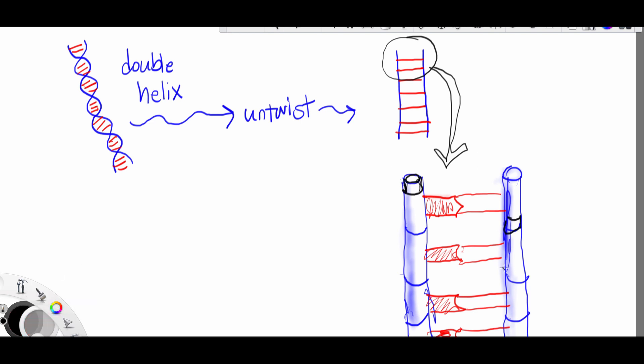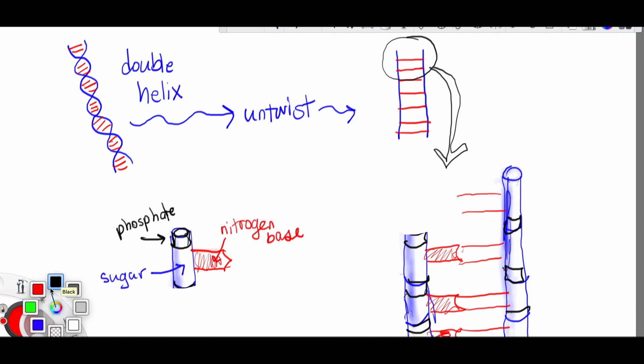You can see the pieces of this ladder. We can take a part of the ladder and show that there's a phosphate and there's a sugar and there's a nitrogen base. These three items make a nucleotide, which again is one letter of DNA.